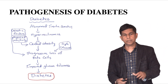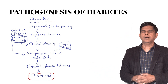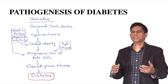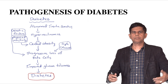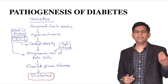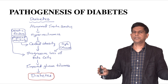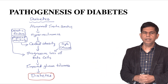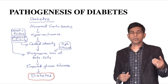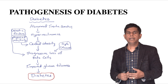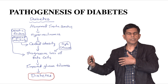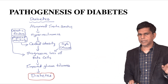Now, the pathogenesis of diabetes: abnormal insulin insensitivity is the big issue — hyperinsulinemia leads to central obesity and progressive loss of beta cells, as well as impaired glucose tolerance, which leads to diabetes. There are also genetic factors that drive the progressive loss of beta cells, and physical inactivity leads to central obesity, all contributing to high blood sugar and diabetes.